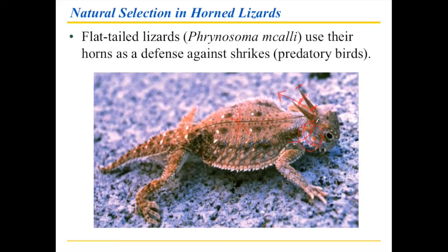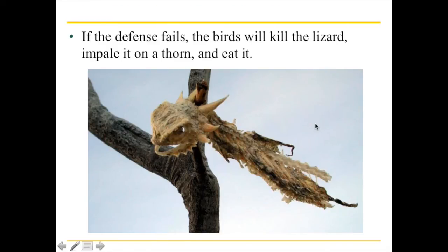If you do end up getting caught, shrikes will kill the lizards by impaling them on a thorn or sometimes a barbed wire fence. Walking along areas with thorns or barbed wire fences in parts of Arizona or New Mexico, you'll find a variety of these lizards impaled on them. That's useful for researchers, who can collect these and measure the horn lengths to figure out whether horn length has anything to do with whether the lizard becomes impaled or not.